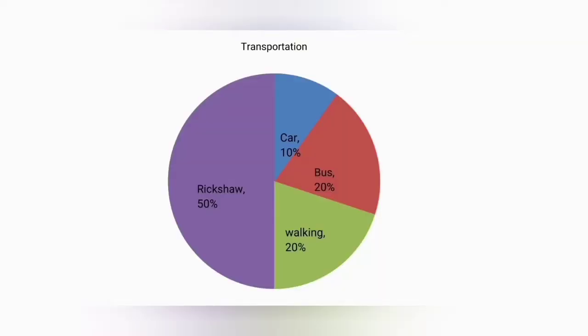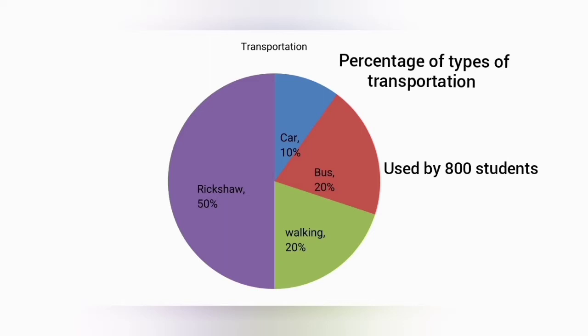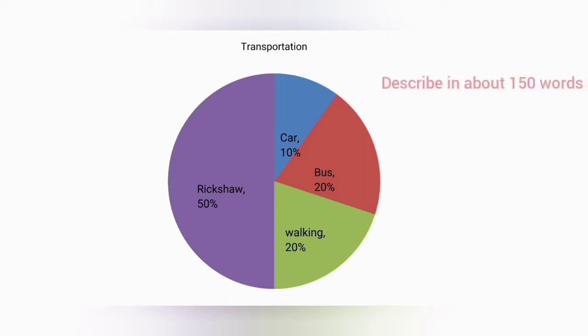It is a new topic for you. In your internal and SSC examination, in English first paper, you have to describe a graph or a chart, whose marks will be 10. Look at the pie chart in the picture. It shows the percentage of types of transportation used by 800 students to come to their school. Now, describe the chart in about 150 words.